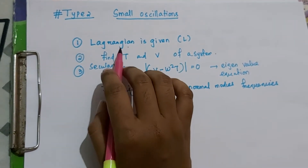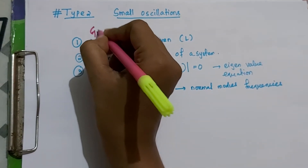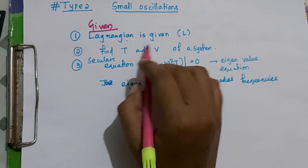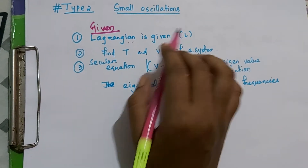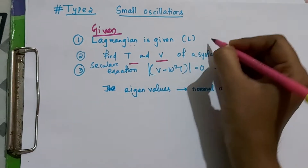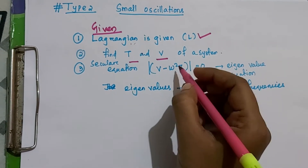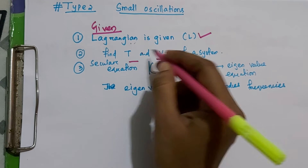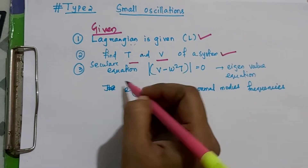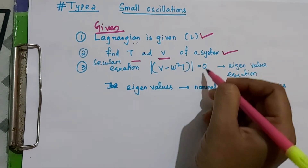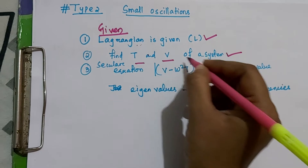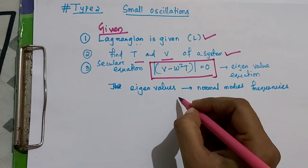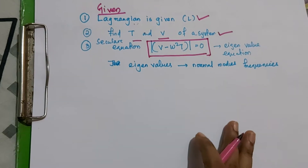In this type of question, the Lagrangian is given and you have to separate T and V from it. If the Lagrangian is not given, and only the potential or kinetic energy part is given, you have to find T and V of the system. After that, you put these into the secular equation, which is nothing but the eigenvalue equation. By solving this eigenvalue equation we find the eigenvalues, which are nothing but our normal mode frequencies.